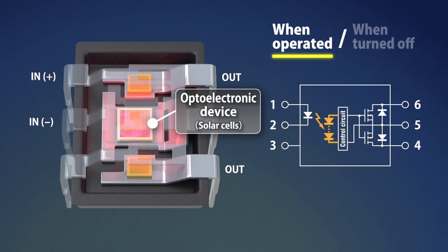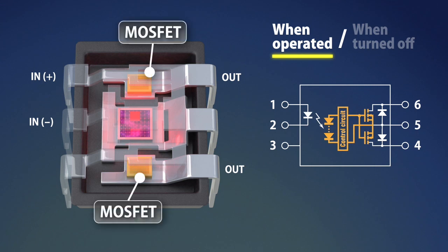The photoelectric element converts the received light to electric power corresponding to the quantity of light. This electric power passes through a control circuit and charges the MOS FET gate on the output side.